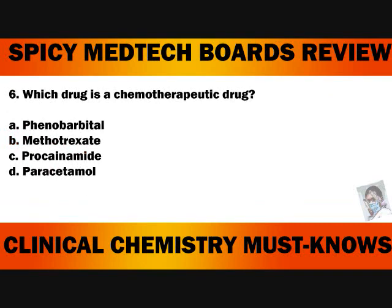Number 6. Which drug is used as a chemotherapeutic drug? A. Phenobarbital. B. Methotrexate. C. Procainamide. Or D. Paracetamol. The answer to number 6 is letter B, Methotrexate.